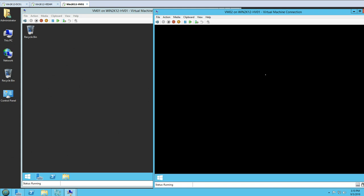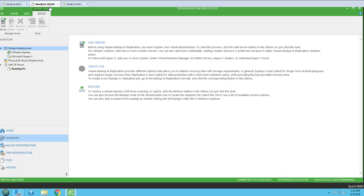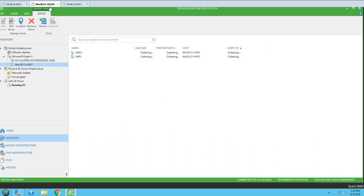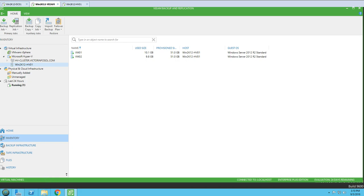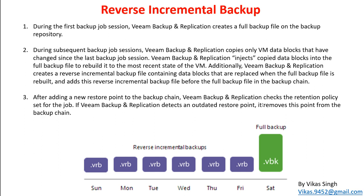Both virtual machines are running fine. Under inventory you can see the Hyper-V host is added here running two virtual machines: VM01 and VM02. This is our infrastructure. Now we are going to perform all the steps during the reverse incremental backup. Let's create the reverse incremental job first and then we are going to verify all these steps one by one during job execution.